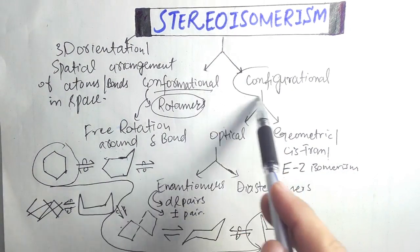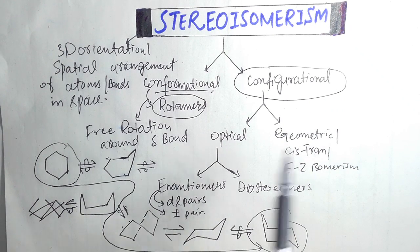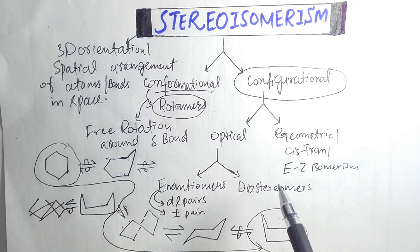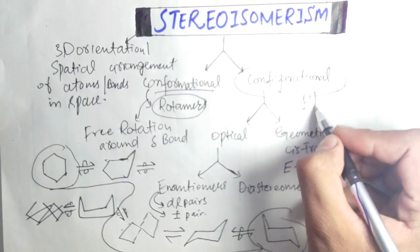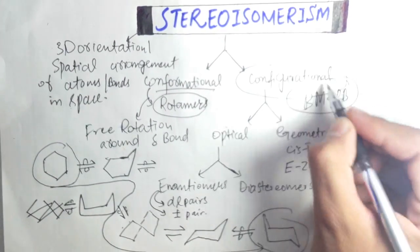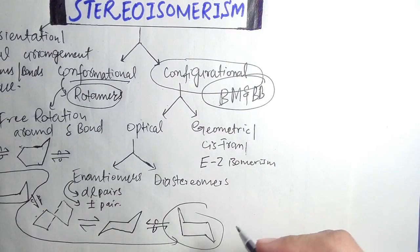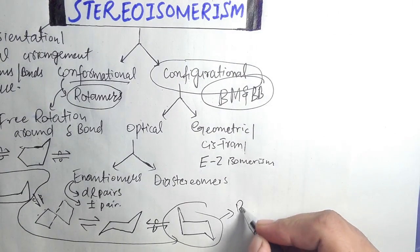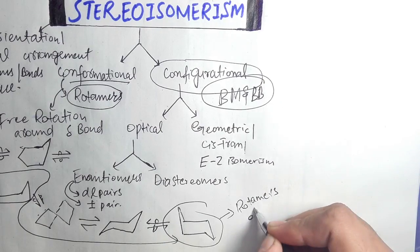Configurational isomerism is isomerism in which isomers cannot be interconverted into each other by free rotation around a sigma bond. Interconversion requires bond making and bond breaking. These are all the rotomers of cyclohexane.